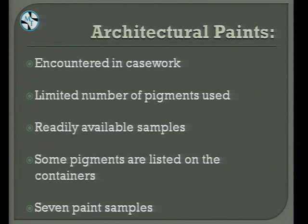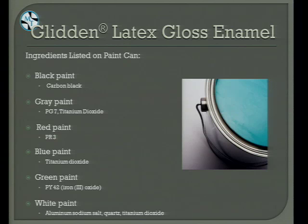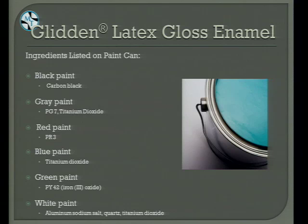Moving on to architectural paints. These are encountered a bit more in casework. This is a great stepping stone from printing inks to architectural paints because there's also a limited number of pigments used. Samples are readily available. In this study, the actual containers had some pigments listed on the side of the cans, and seven paints were analyzed. The paint was Linden Latex Gloss Enamel. The black paint had carbon black; the gray had Pigment Green 7 and titanium dioxide; the red had Pigment Red 3; the blue had titanium dioxide; the green had Pigment Yellow iron oxide; the white had aluminum sodium salt, quartz, and titanium dioxide. There was also a brown paint that did not have pigments listed on the label.